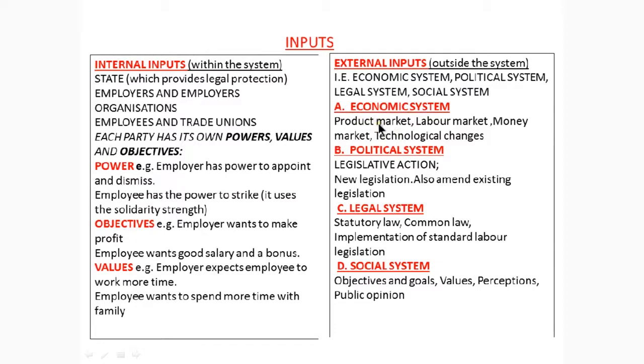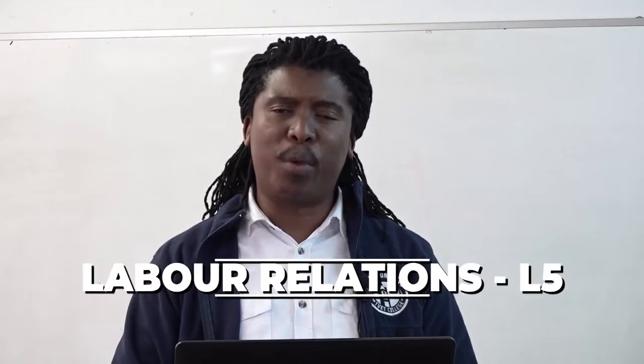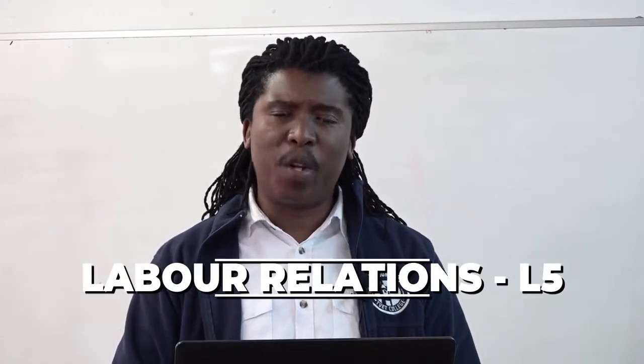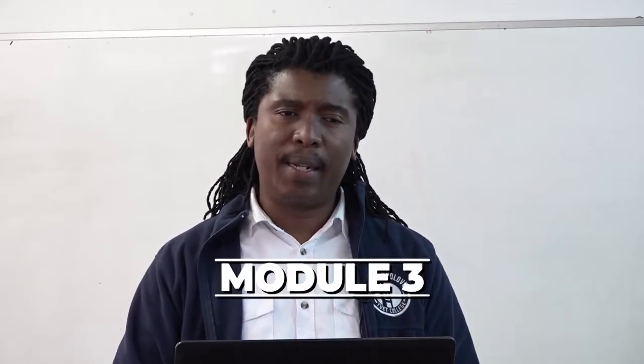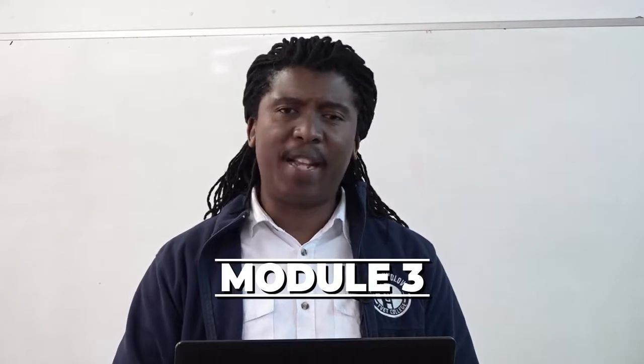If you look in terms of the economic system, it has got a product market — a product within the market in relation to the demand for it. If there is a decrease in the demand of a product, the companies will be required to cut costs and try to reduce as many costs as they can. One measure is to retrench employees, which will backfire because the employees and unions are not going to entertain that. They are going to go on strike, which will reflect back to the labor relations system of the country.